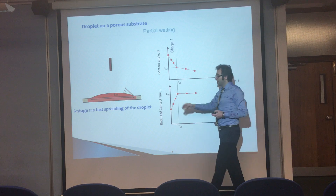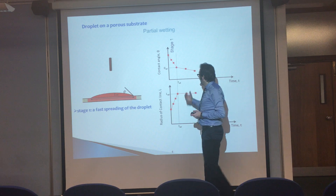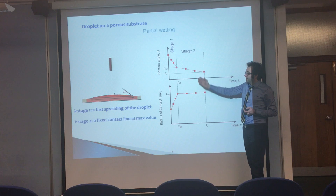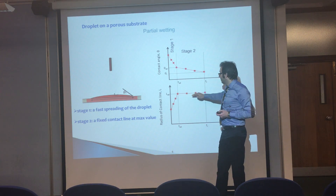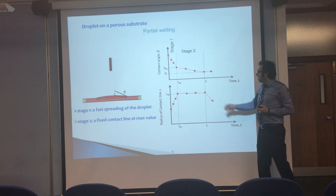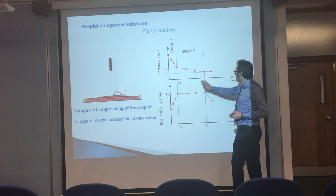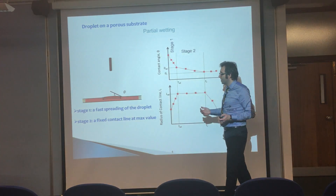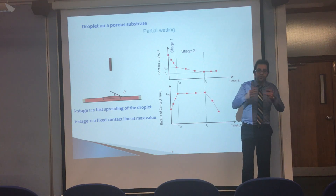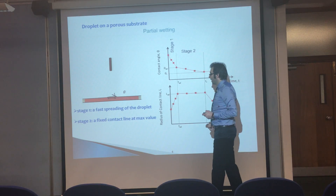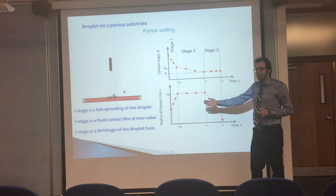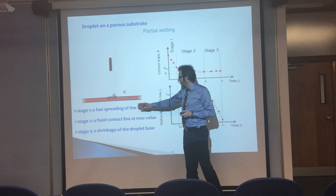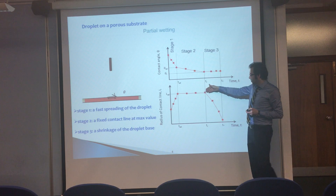After this stage, the contact angle decreases further due to the loss of volume caused by penetration inside the porous layer, but the droplet base radius remains fixed at its maximum value — the edge of the droplet is pinned over the porous substrate. This continues until the contact angle drops to the receding contact angle. So during the second stage the droplet base radius remains fixed. After this, the droplet shrinks due to penetration inside the porous substrate and continues until all the liquid is sucked completely by the porous substrate — this is the third stage, the shrinkage of the droplet base radius. In summary, in partial wetting we have three stages: fast spreading, a fixed contact line, and shrinkage of the droplet base radius.